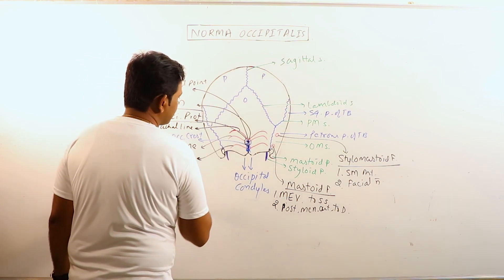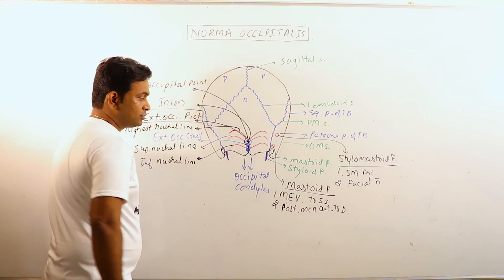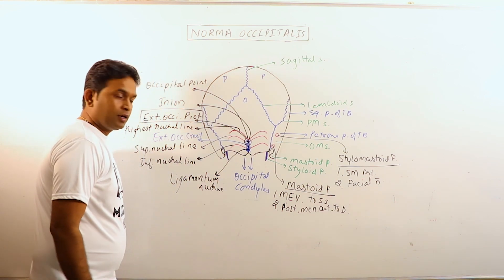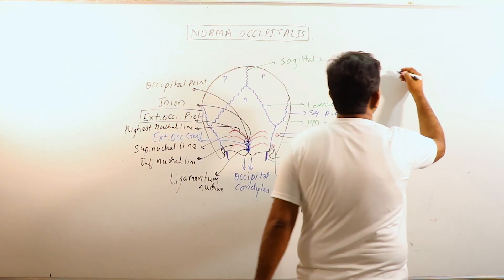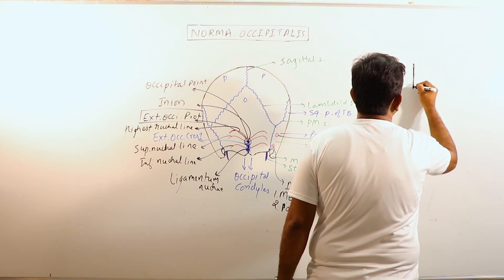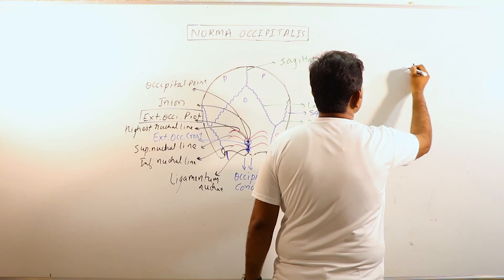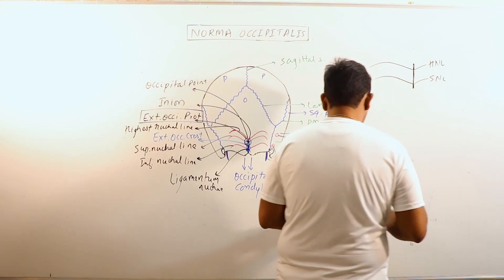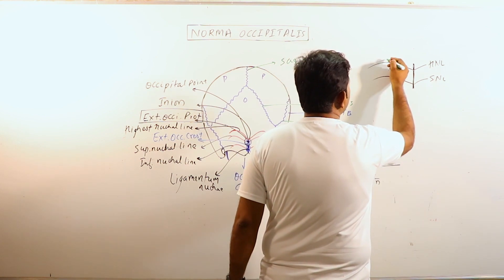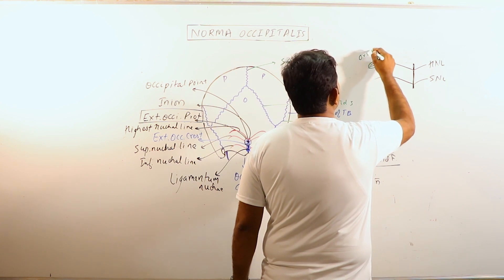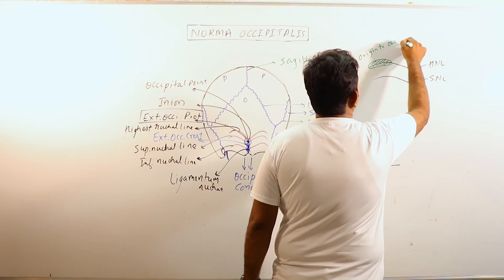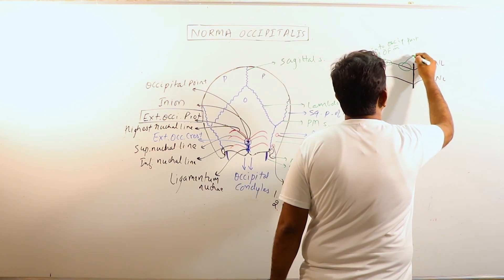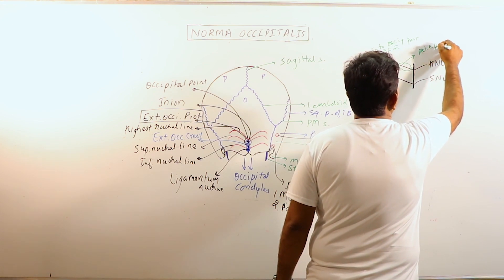External occipital protuberance gives origin to the trapezius in its upper portion and ligamentum nuchae in the lower portion. These nuchal lines are also important for the origin and insertion or attachments. For example, the lateral part of highest nuchal line gives origin to occipital part of occipitofrontal muscle while the medial portion gives attachment to epicranial aponeurosis.